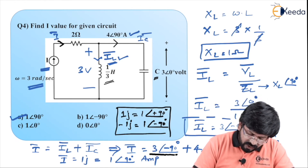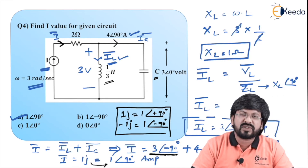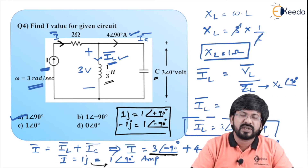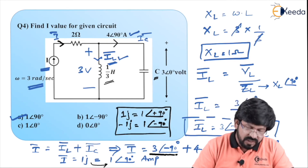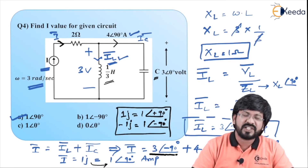We back-converted to polar values because the options were given in polar form. So you have to adapt yourself according to the options given. I am sure you understood this problem.